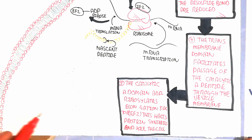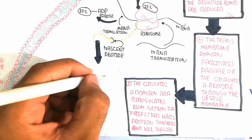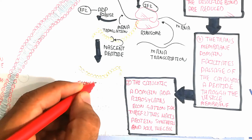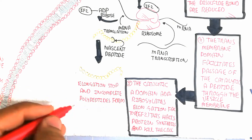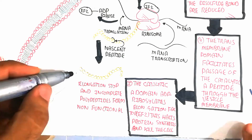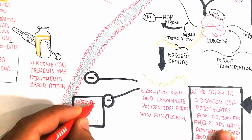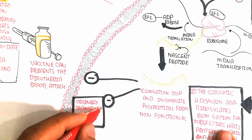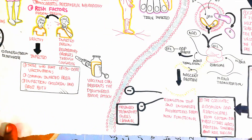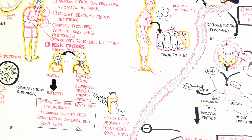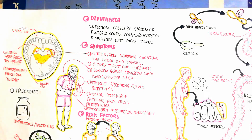Elongation stops and an incomplete, non-functional polypeptide is formed, which is also harmful to the cell. The cell is damaged due to targeting of organelle transport, producing pores and channels leading to infection and inflammation. The damaged cell releases inflammatory mediators, recruiting macrophages, monocytes, and dendritic cells as part of the innate immune response. The dendritic cells then recruit B memory cells and T cells, activating the adaptive immune response. Thanks for watching — please make sure to subscribe, like, and share.